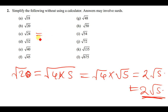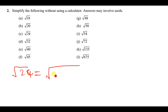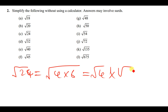For √24, we find a perfect square that can go into 24. We know that 4 can go into 24 six times. So the square root of 24 can also be written as the square root of 4 times 6, which can also be written as the square root of 4 times the square root of 6, which is just the same as 2√6.